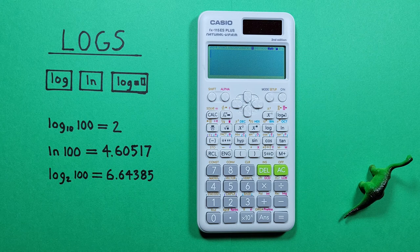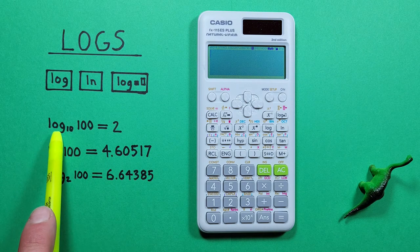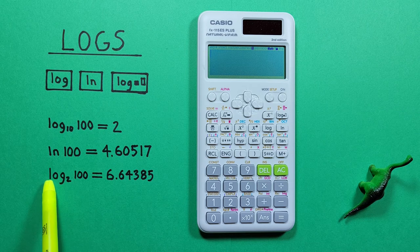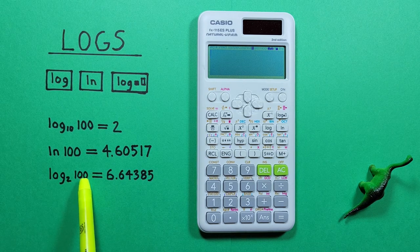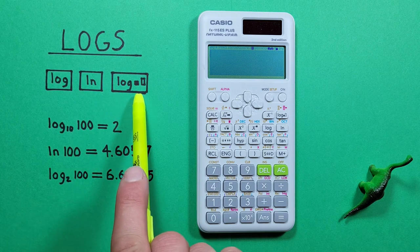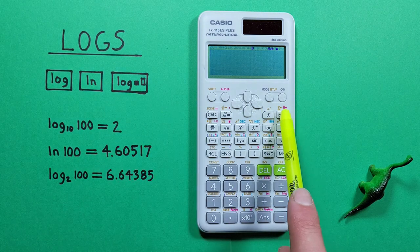But what if we want to find a log with a base that isn't log base 10 or natural log, like for example say log base 2 of 100? Well that's where we use this log key with the variable or changeable base. It looks like this located here.